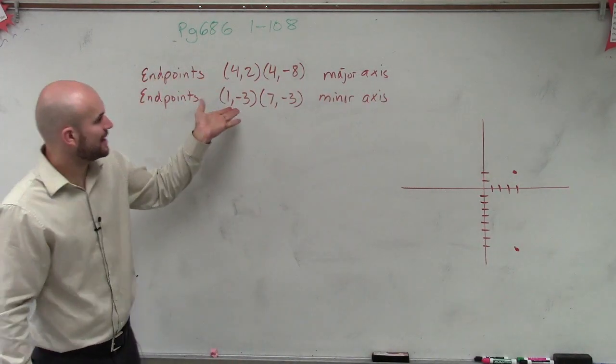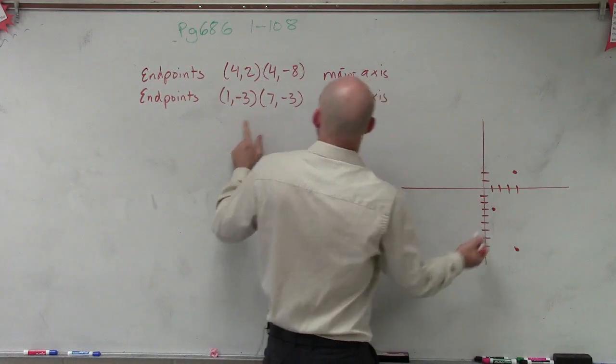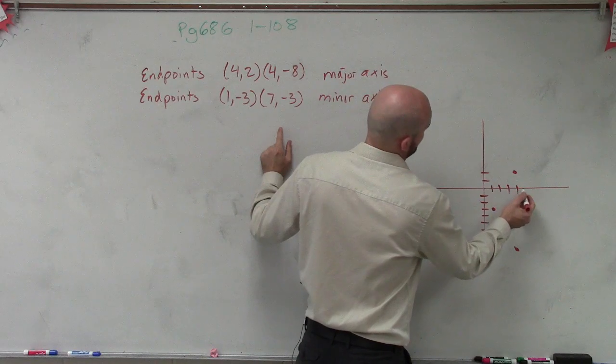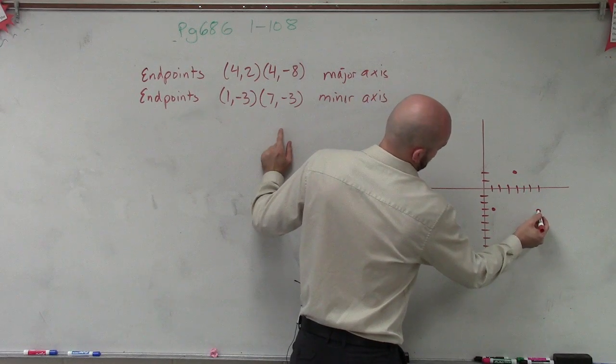Then we have endpoints of our minor axis which are at (1,-3) and at (7,-3). So 1, 2, 3, 4, 5, 6, 7, down to negative 3.